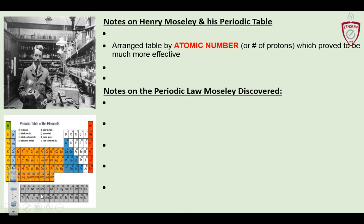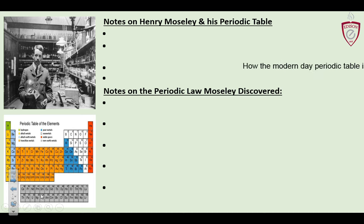He set up his table not by atomic mass but by atomic number. So instead of values like 47.25 or 49.35, it was simply one, two, three, four, five — much easier to add on. This is how the modern periodic table is arranged, going in succession by number of protons.